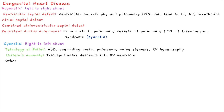Cyanotic heart disease can be caused by tetralogy of Fallot, which has four main abnormalities: a ventricular septal defect, an overriding aorta, pulmonary valve stenosis, and right ventricular hypertrophy — as the right ventricle has to contract against a narrowed pulmonary valve.